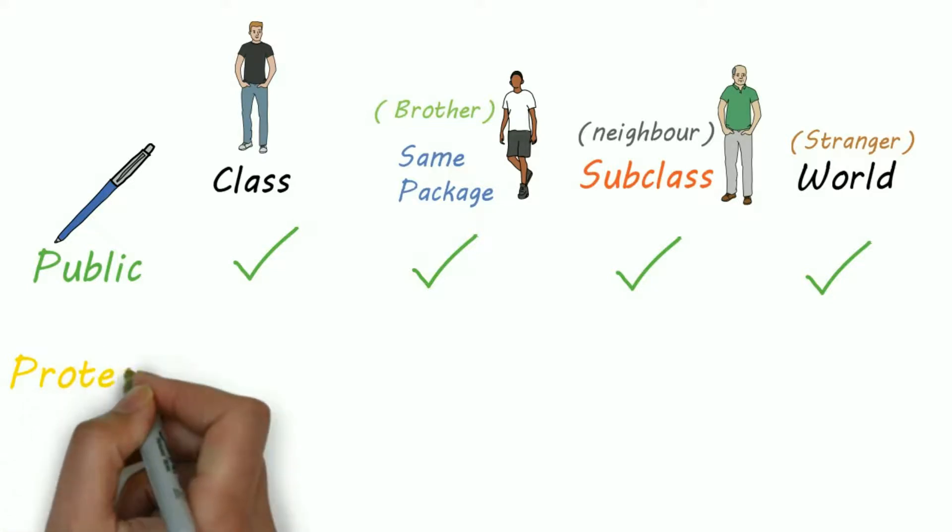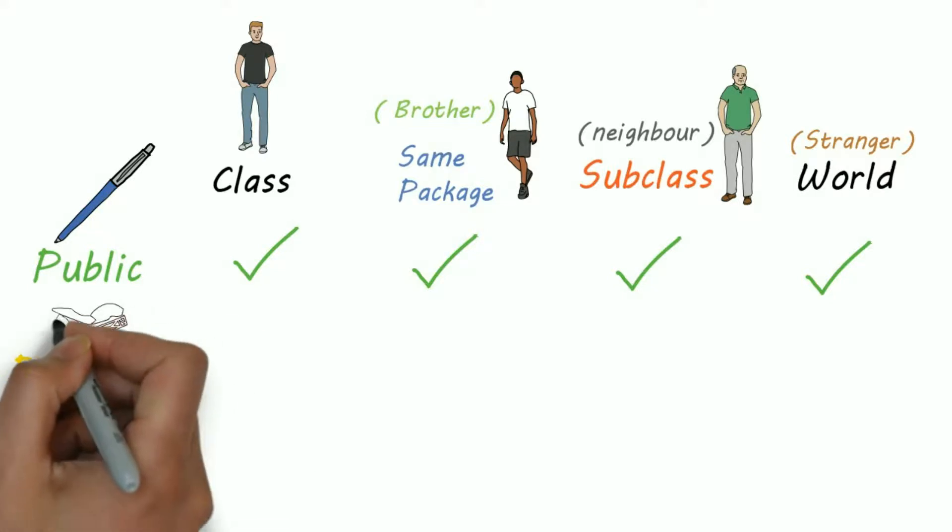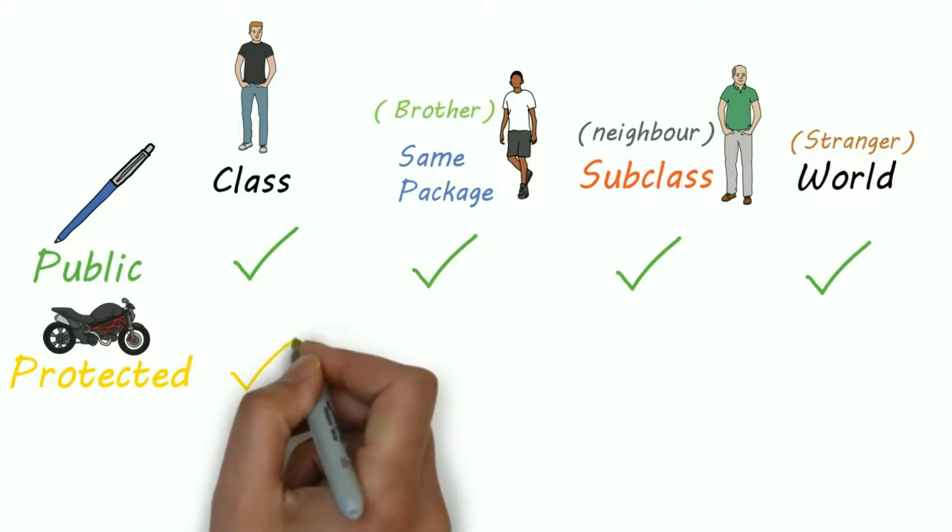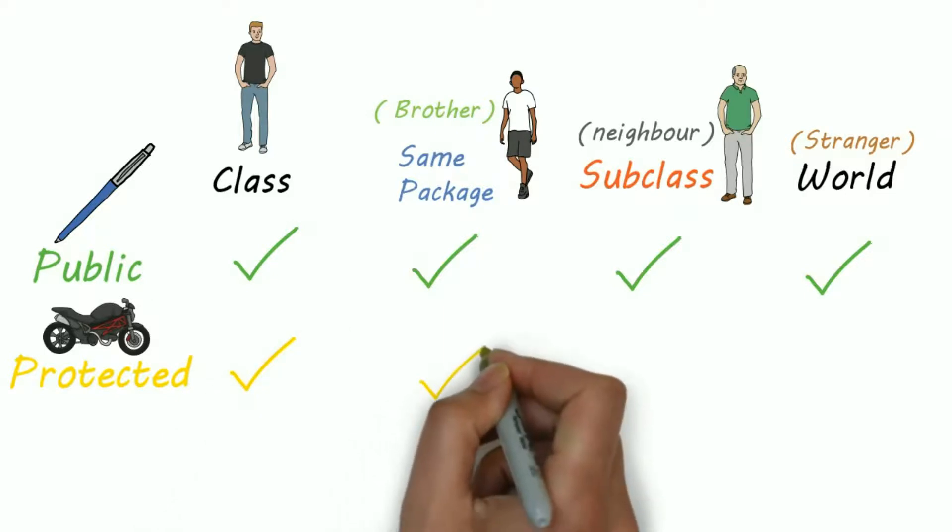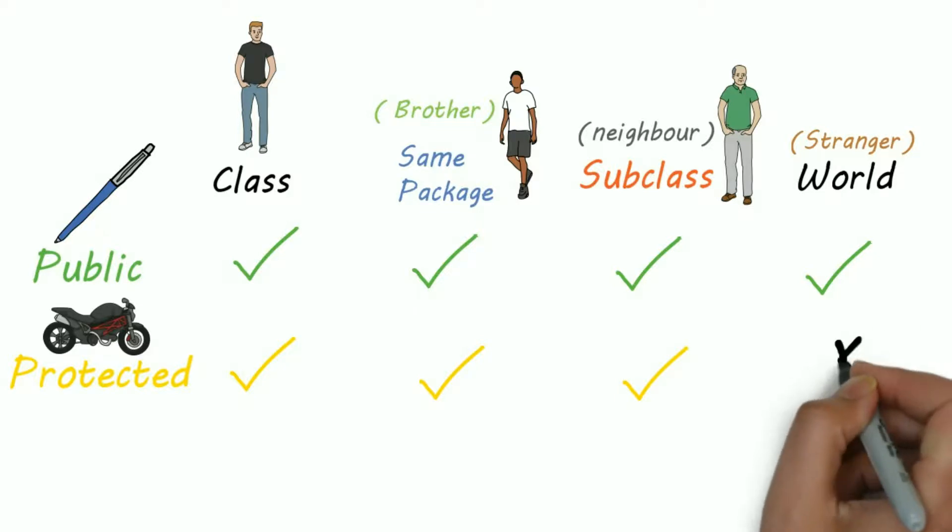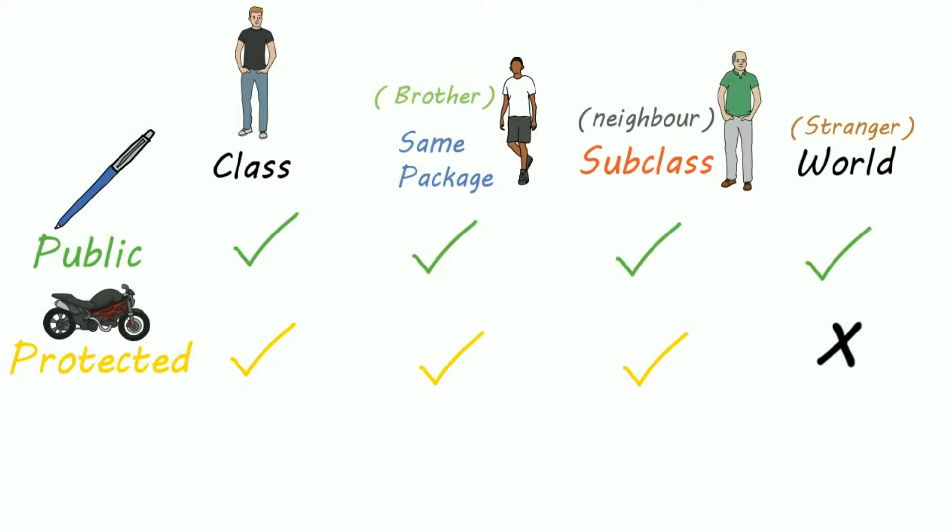Now protected. Suppose you have used a protected modifier for your bike. This means you can use it, your brother can use it, or if your neighbor wants your bike for a day, you don't have any problem with that. But you'll never give your bike to a stranger for a day.